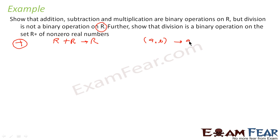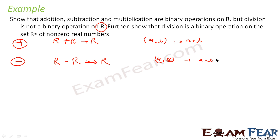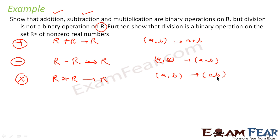For addition: a, b implies a plus b — if you add two real numbers you always get a real number, so addition is a binary operation on R. Similarly for subtraction: a, b implies a minus b — subtracting two real numbers always gives a real number. For multiplication, taking two real numbers and multiplying always gives a real number, so multiplication also holds true for R.